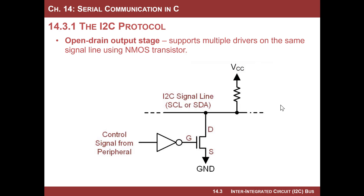To understand how I²C behaves, you start with the concept of an open drain output stage. This is what an I²C output stage looks like. The way I²C was designed, having many devices hanging off the same data line and clock required a way to implement bus arbitration — how does somebody take over the bus and start driving? They came up with the open drain output stage to solve this.